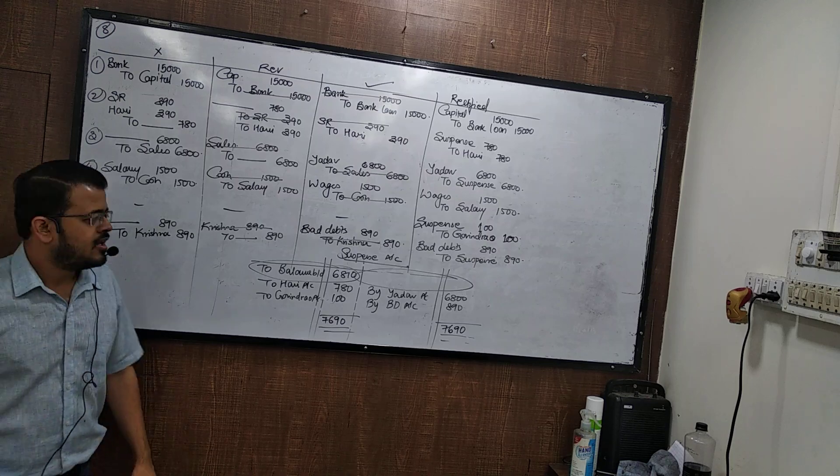Total of purchase book of 23,000 was posted to purchase account as 13,000. You stated 13 instead of 23 — it was understated, so it needs to be increased. Rectified entry: purchase to suspense, 10,000.